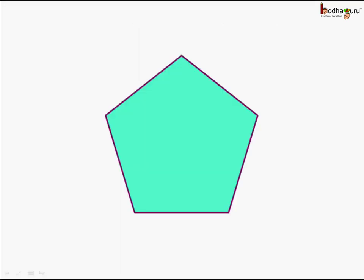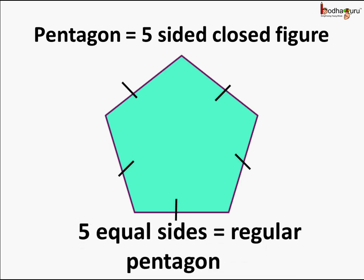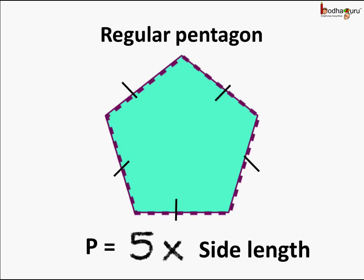Here we have a closed figure with 1, 2, 3, 4, 5 sides. So it is a pentagon with 5 sides. And if all 5 sides are of equal length, then we can say it is a regular pentagon. The perimeter of a regular pentagon will be equal to 5 times the length of each side, which is the same for all 5 sides.